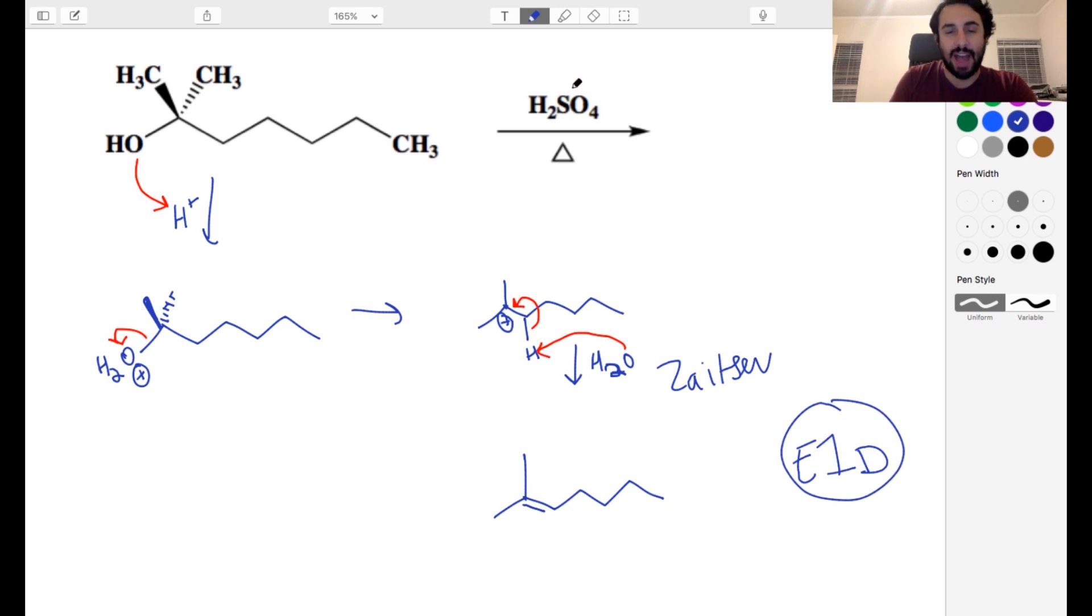So remember whenever you've got acid we've got to protonate something. Hydroxyl is the only thing that's gonna protonate. Now we've got water and because this is a tertiary center this can leave. We get a tertiary carbocation and then water will go and eliminate. We get our elimination product. We're gonna get the Zaitsev elimination product. So that is that one there.